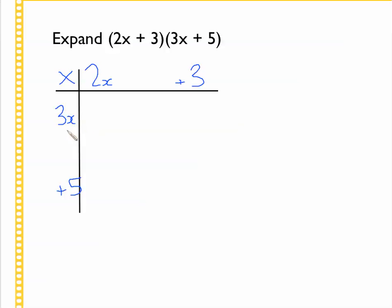And then we just multiply out. Three x times two x is six x squared. Three x times positive three is plus nine x. Two x times plus five is plus ten x. Plus five times plus three is plus fifteen.